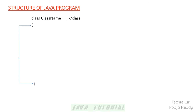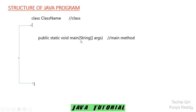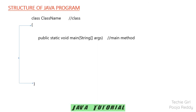To execute any program we should have a main method, and Java also has a main method: public static void main(String[] args). Here, main is the method name, which accepts one argument. String is a class — you need to remember that String starts with a capital letter.